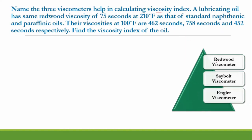The three viscometers used to calculate viscosity are: Redwood viscometer, Saybolt viscometer, and Engler viscometer. A detailed video on the differences among these three is already posted. Just to remind you: in the Redwood viscometer we have Redwood No. 1 and Redwood No. 2 — it records the time taken by 50 ml of oil to fall from an orifice. In the Saybolt viscometer, time is taken by 60 ml of oil, and in the Engler viscometer, the time taken by around 100 ml of oil relative to that of water is noted. In this question they mention Redwood viscosity, meaning a Redwood viscometer was used.